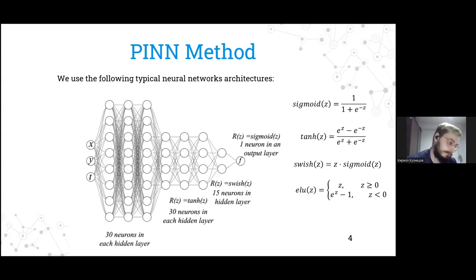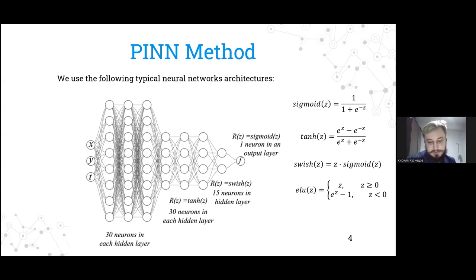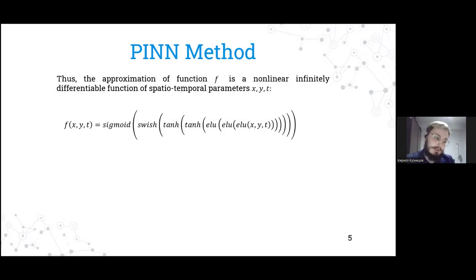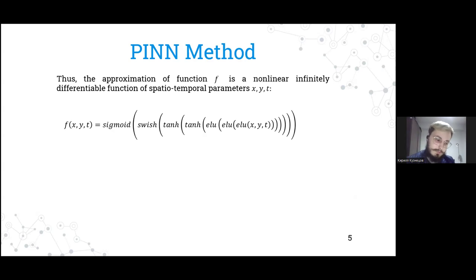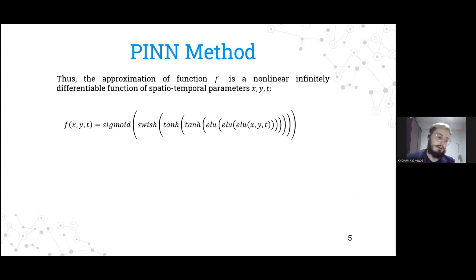This is an approximation, and you can obtain an infinite number of approximations using an infinite number of different neural network architectures. We stopped at this architecture because we believe it is the most efficient. The approximation in general reduces to one highly nonlinear, infinitely differentiable function of some input parameters. In our case, we approximate, for example, temperature — it is a function of spatiotemporal parameters x, y, t. We define the approximation and then put it into our equations.